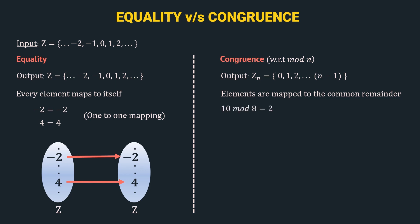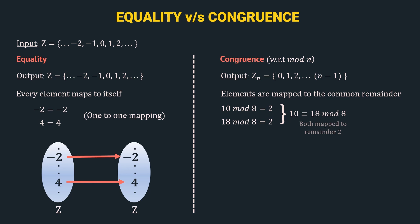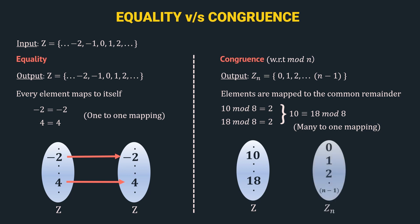So consider 10 mod 8 is equal to 2, and 18 mod 8 is equal to 2. So this implies that 10 is congruent to 18 mod 8. Now, both these numbers — 10 and 18 — are mapped to the remainder 2. And hence, it is a many-to-1 mapping. Let's visualize this. So, this is the input — the set of integers — and this represents the output that is Zn, which contains numbers from 0 to n-1. So, 10 is mapped to 2 and also 18 is mapped to 2. So, it is a many-to-1 mapping.